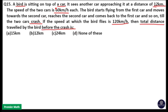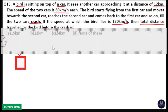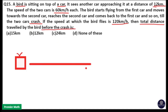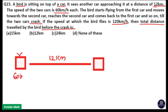Here a bird is sitting on top of a car. Another car is approaching at a distance of 12 km, so the distance between these two cars is 12 km. The speed of both cars is 60 km per hour — one travelling in one direction, the other travelling in the opposite direction, meaning these two cars are facing each other.